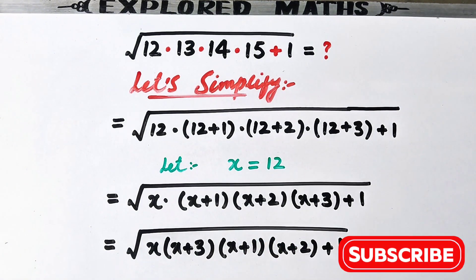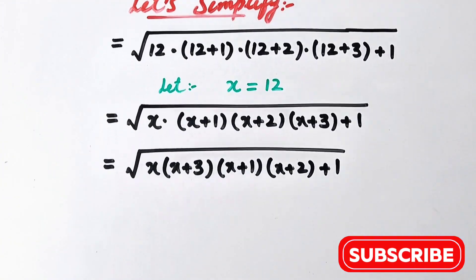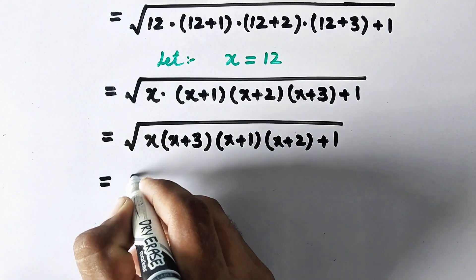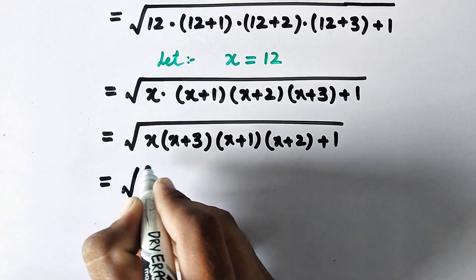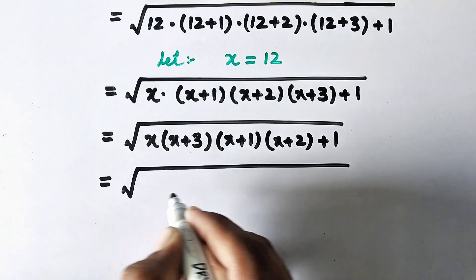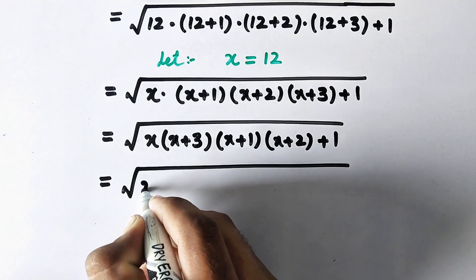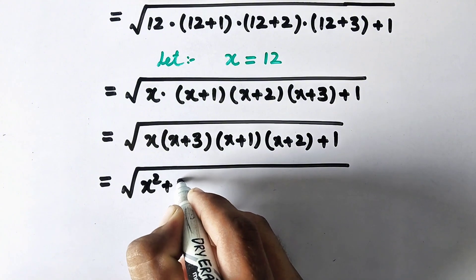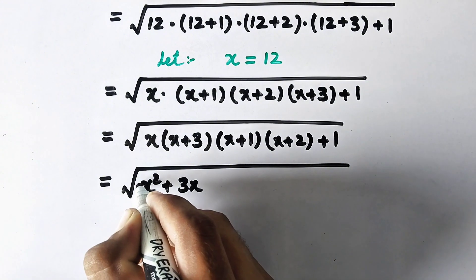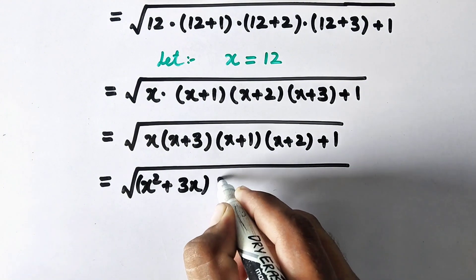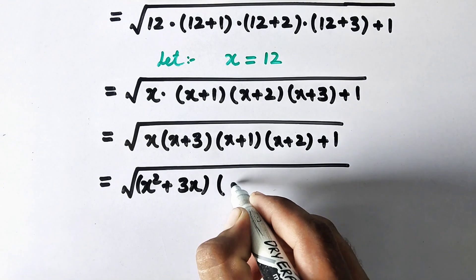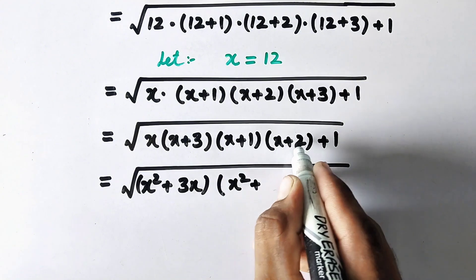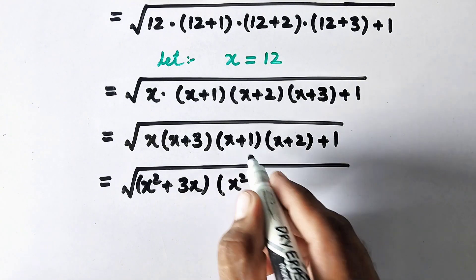Multiplying these pairs out: x times x plus 3 gives x squared plus 3x, and x plus 1 times x plus 2 gives x squared plus 3x plus 2. So we can let y equal to x squared plus 3x.